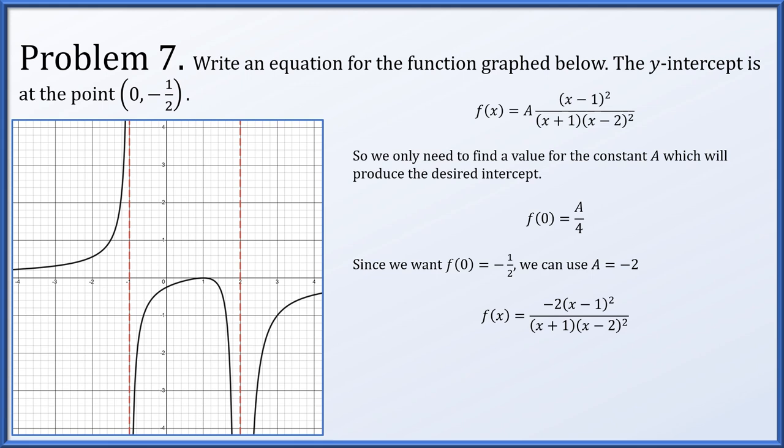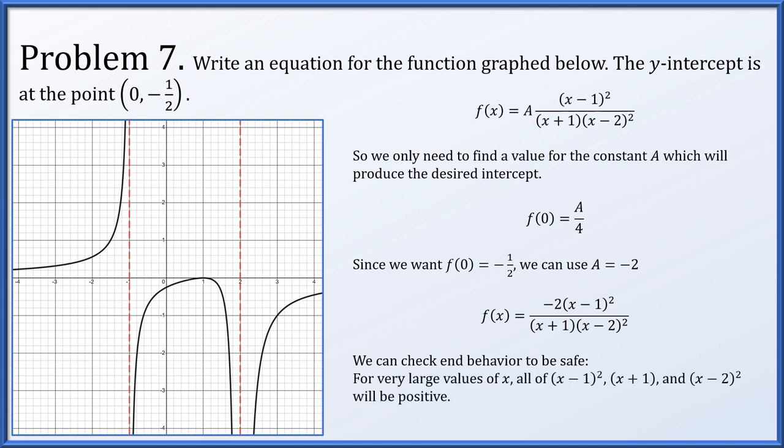This function has all the correct roots and vertical asymptotes with matching multiplicities, the correct horizontal asymptote, and it matches the explicitly given intercept. We can check end behavior: for very large positive x, every factor is positive, and our graph is negative, so multiplying by a negative constant is consistent.